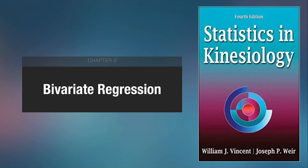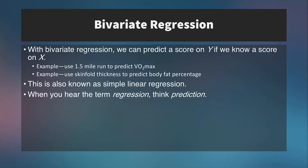This comes from chapter eight of the textbook Statistics in Kinesiology by Drs. Vincent and Ware. The entire purpose of bivariate regression is to predict one variable from another variable. Usually the predicted variable is something that's hard to measure, like a VO2 max.